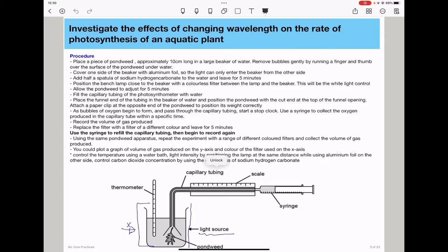You need to place a piece of pondweed approximately 10 cm long in a large beaker of water, and then remove bubbles gently by running a finger and thumb over the surface of the pondweed under water. This is to ensure that there are no bubbles of gas that are going to interfere with our experiment, and to ensure that any produced oxygen can leave the pondweed properly. You will cover one side of the beaker with aluminum foil so that the light can only enter the beaker from the other side, and add half a spatula of sodium hydrogen carbonate to the water and leave for 5 minutes.